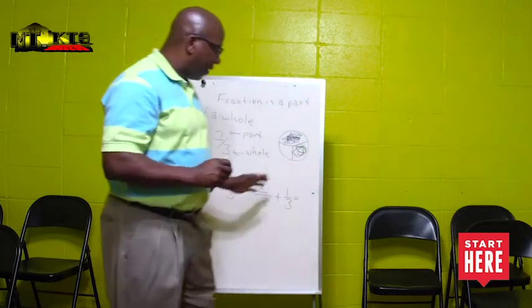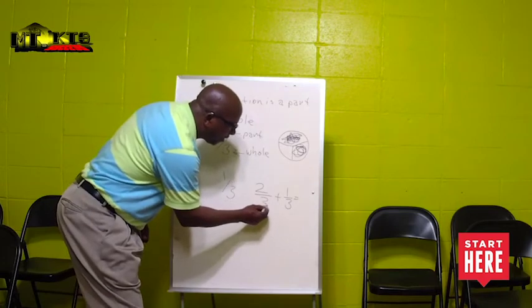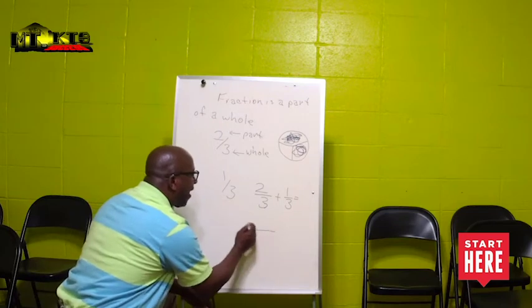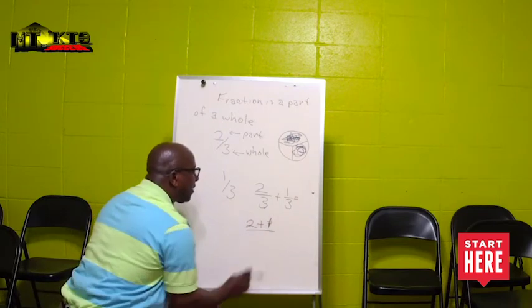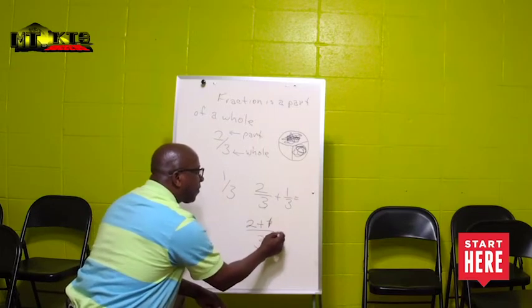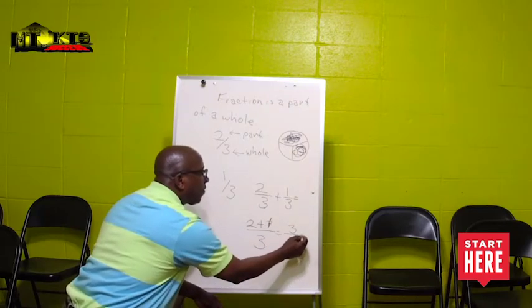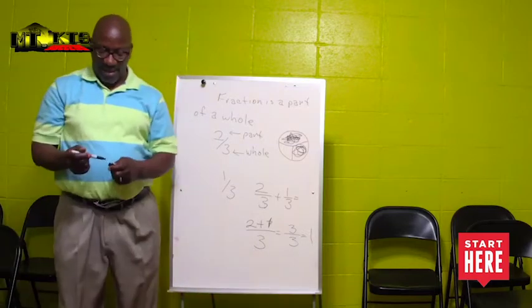In other words, the denominators for each fraction have to be the same. Here, our denominator, which is three, is the same. So if I was going to add this, I would have two plus one in the numerator, and three is the denominator. Two plus one is three over three. Three over three is one — that gives me one entire whole.